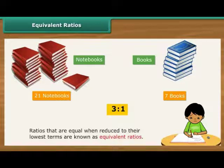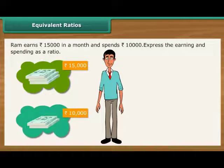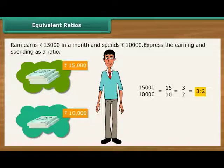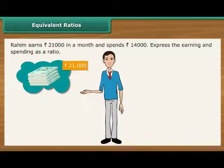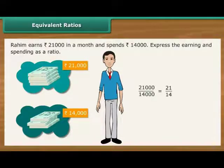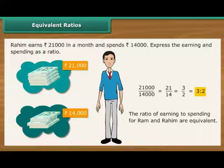Let us verify whether the following ratios are equivalent or not. Ram earns Rs. 15,000 in a month and spends Rs. 10,000. 15,000 by 10,000 is 15 by 10 which, when reduced to the lowest term, is equal to 3 is to 2. It means that out of every 3 rupees earned, Ram spends 2. Raheem earns Rs. 21,000 in a month and spends Rs. 14,000. 21,000 by 14,000 is 21 by 14 which, when reduced to lowest term, is equal to 3 is to 2. It means that out of every 3 rupees earned, Raheem also spends 2. The ratios for earning to spending for Ram and Raheem are equivalent.